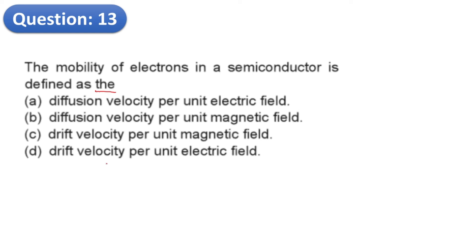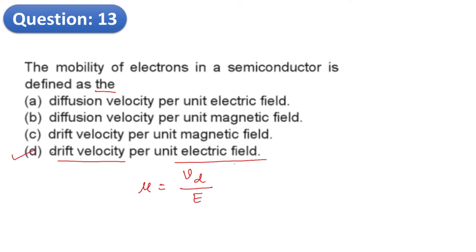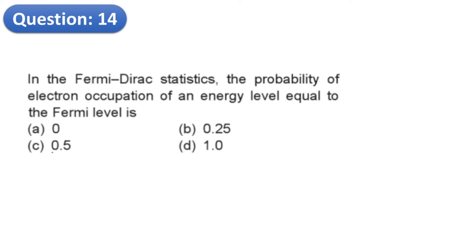Question 13: The mobility of electrons in a semiconductor is defined as the ratio of drift velocity Vd to electric field E — that is, drift velocity per unit electric field. Option D is the right answer.